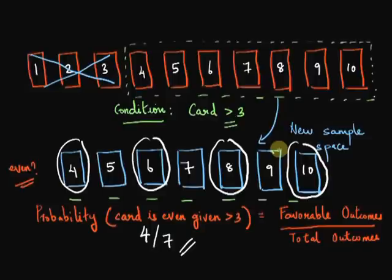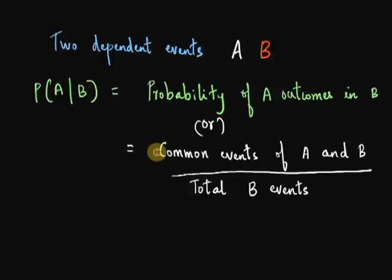Take the case of our earlier card example. A was the probability of an even number and B was a condition that said the card drawn is greater than 3. So our numerator was events that were both even and greater than 3, which was 4, 6, 8, and 10. And the denominator was the total number of outcomes that satisfied condition B, which was all cards greater than 3. So my numerator can be written as P(A intersection B), common to A and B, divided by the probability of B, which indicates the total number of B events.